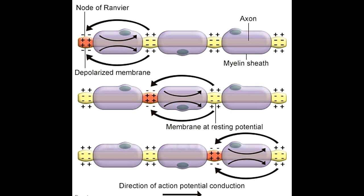A neuron receives chemical neurotransmitters from a neighboring neuron and converts these chemical neurotransmitters to electrical impulses, which are transmitted to the next neuron via the axon. The axon is a long tubular canal surrounded by positively charged extracellular fluid. The axon's insides also contain a fluid which is negatively charged. An impulse traveling down the axon is so strong that it reverses the polarity of every section it passes through.